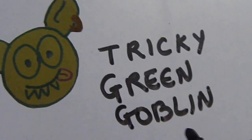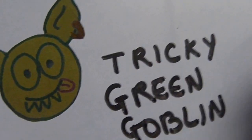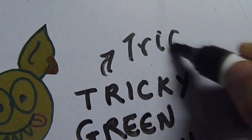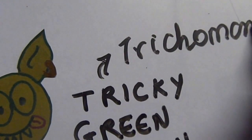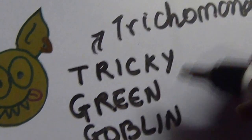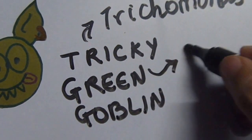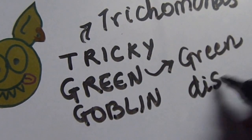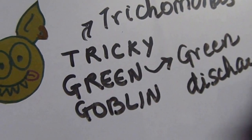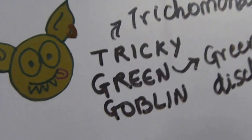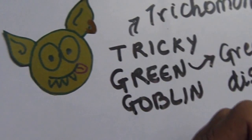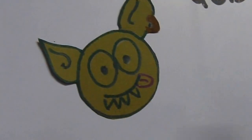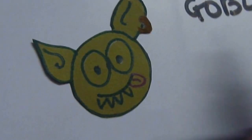Tricky, as you can guess, stands for Trichomonas. Green is for the green color discharge associated with Trichomonas vaginalis infections, and goblins are green in color. There are a lot of features about this goblin that are gonna help us remember the characteristics of the infection.